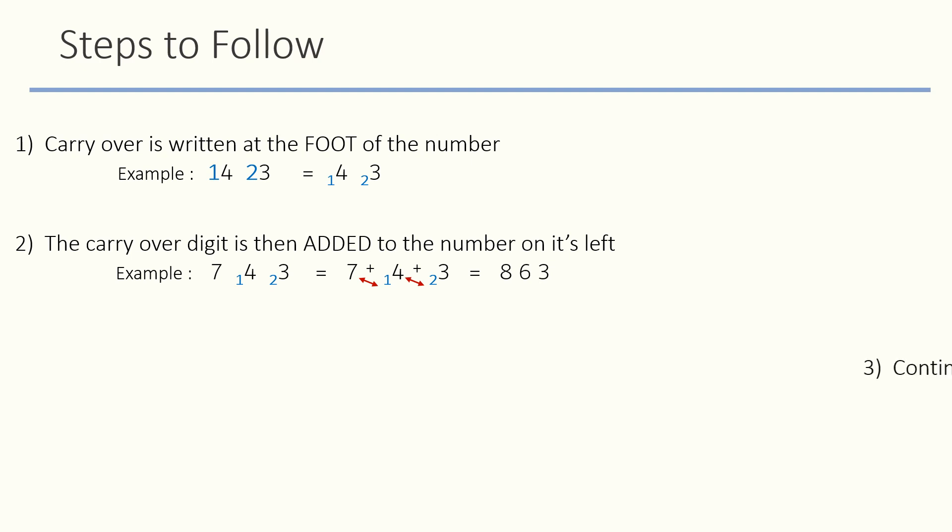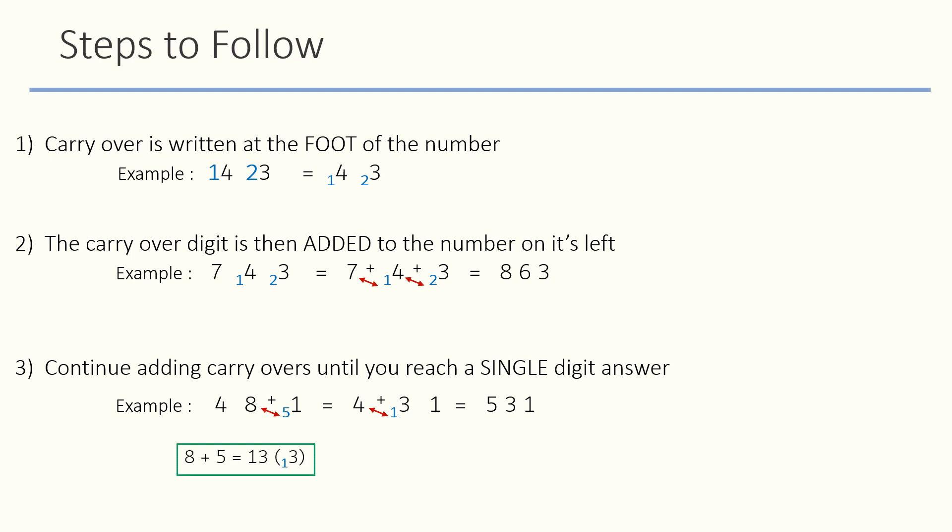Step 3: Continue adding carryover until you reach a single digit answer. So here when we add 8 and 5, we get 13, which again has a carryover 1. So we will continue solving and add carryover 1 to the digit on its left which is 4 to get 5.